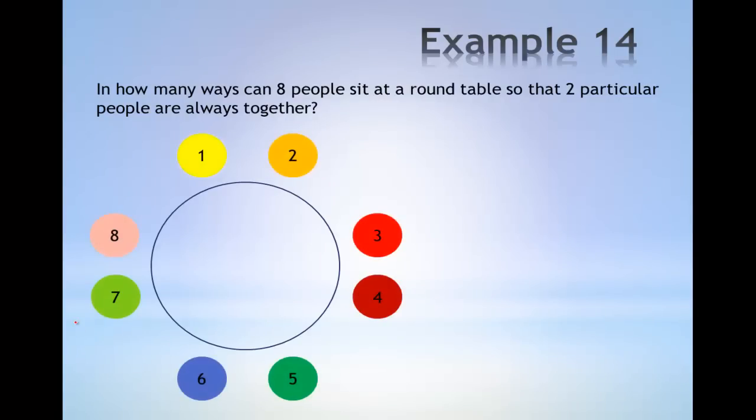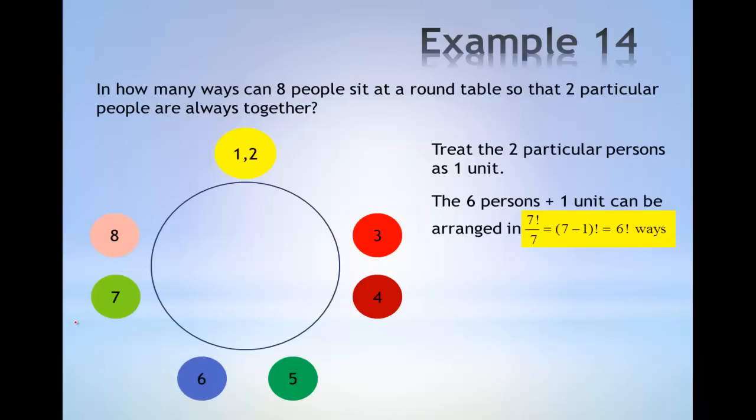Consider eight individuals seated around a table. Treat the two particular persons as a single unit. This gives six individuals and one combined unit, for a total of seven units.